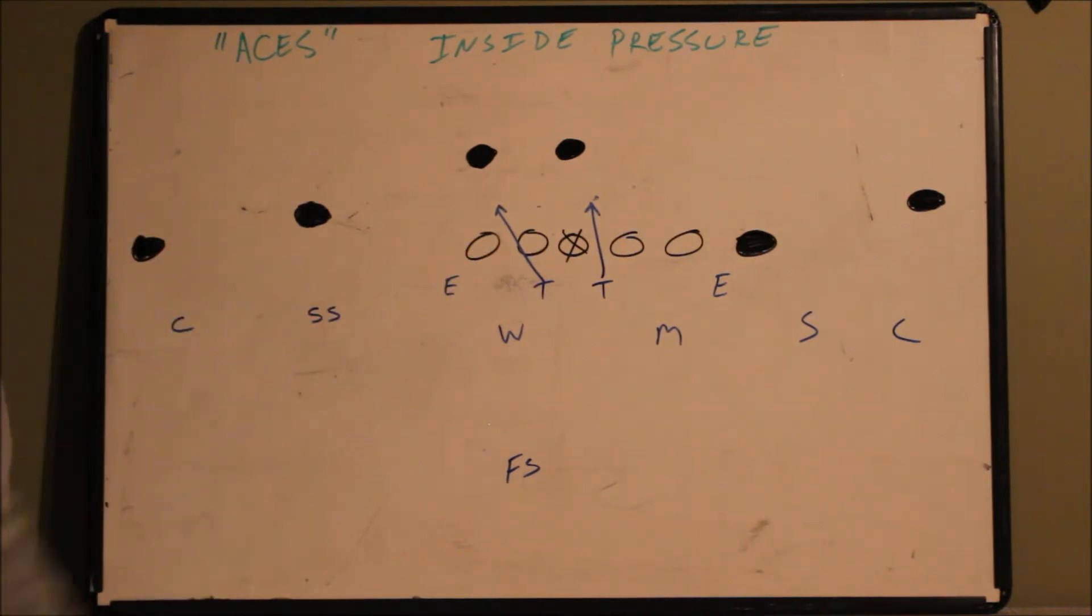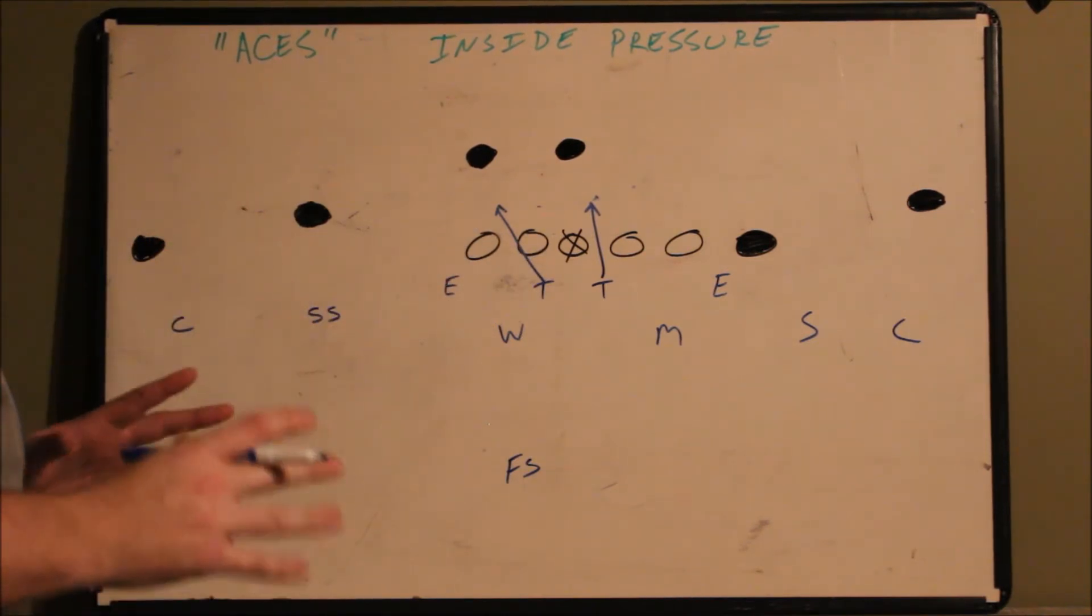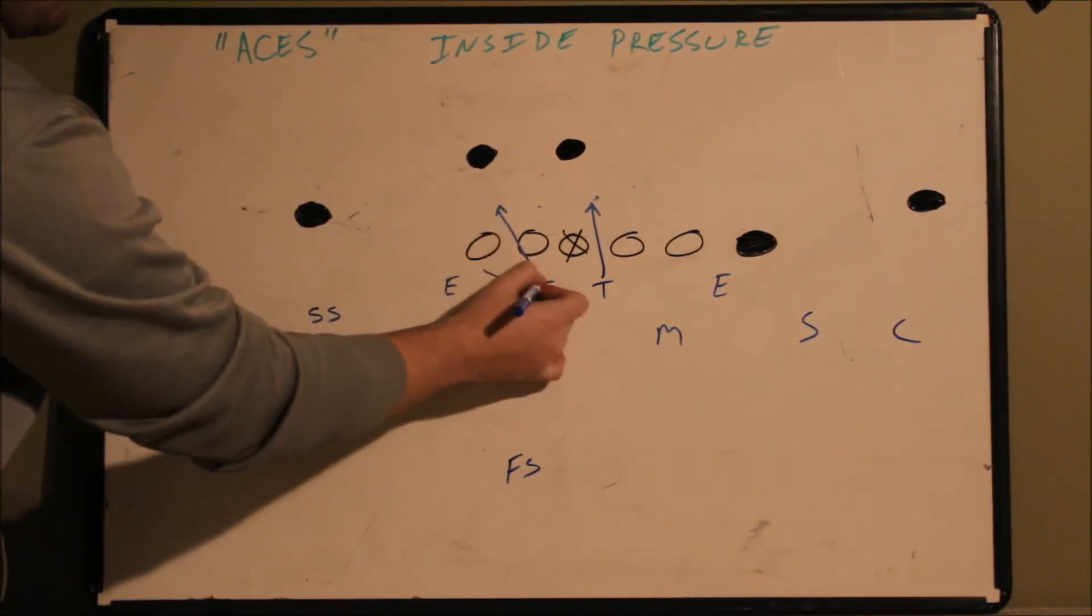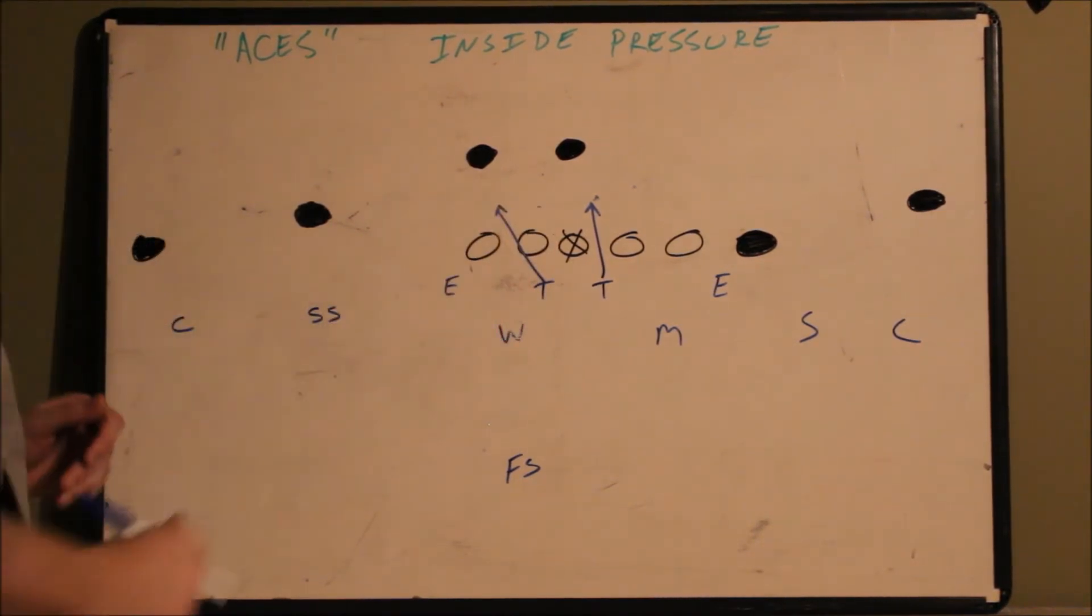he has to dip and rip through the outside shoulder of the guard. These kids can't run around blocks. They got to rip through him. He must maintain his B gap responsibility.